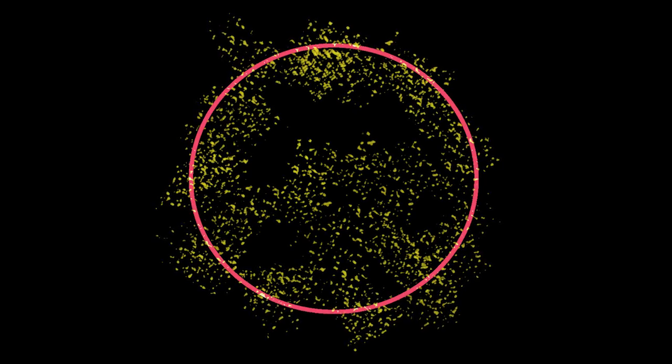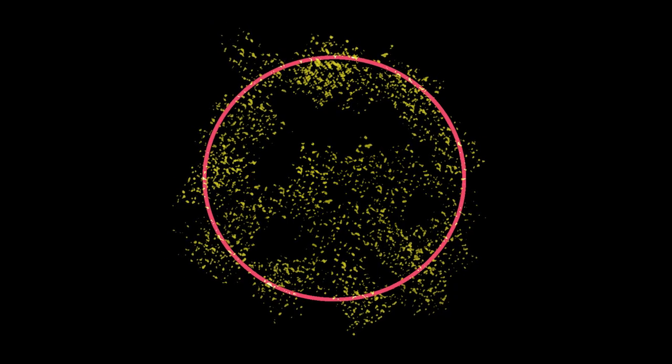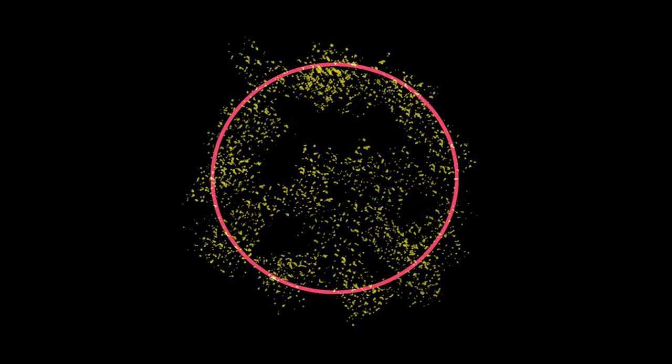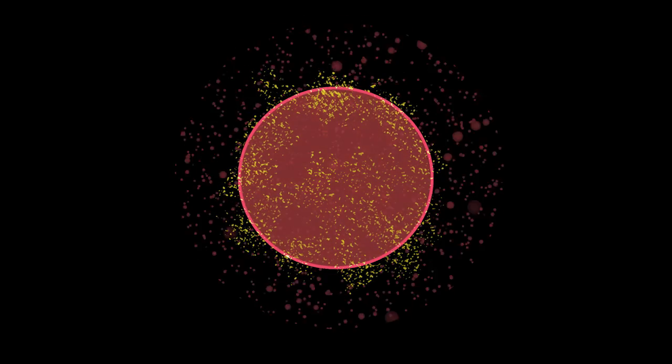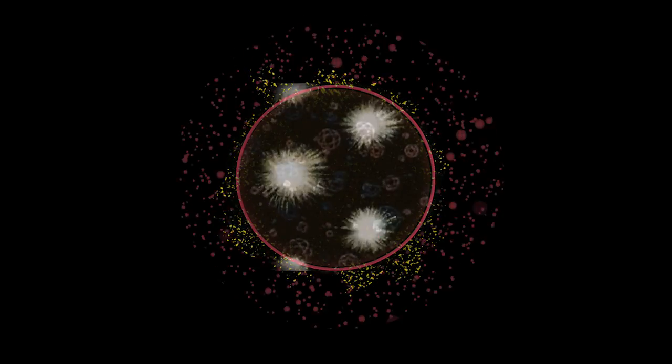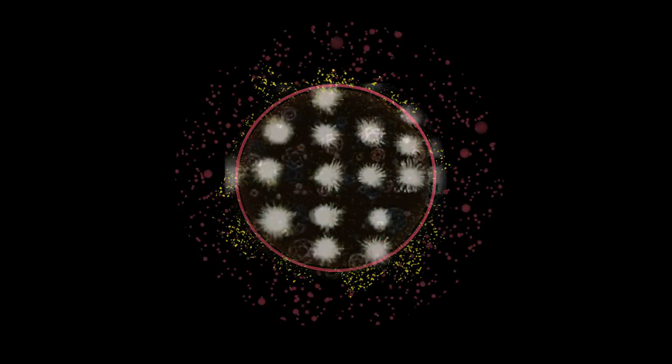All a star is, is a dust cloud that is collapsing under the force of gravity. And when you compress gas together, it actually heats up. There's a time when that's hot enough to set off a nuclear fusion reaction. And that actually supports the star. This nuclear explosion inside supports the star against further collapse.